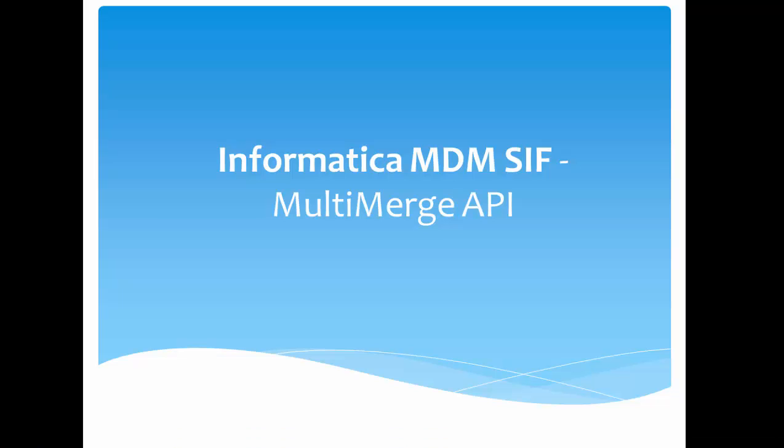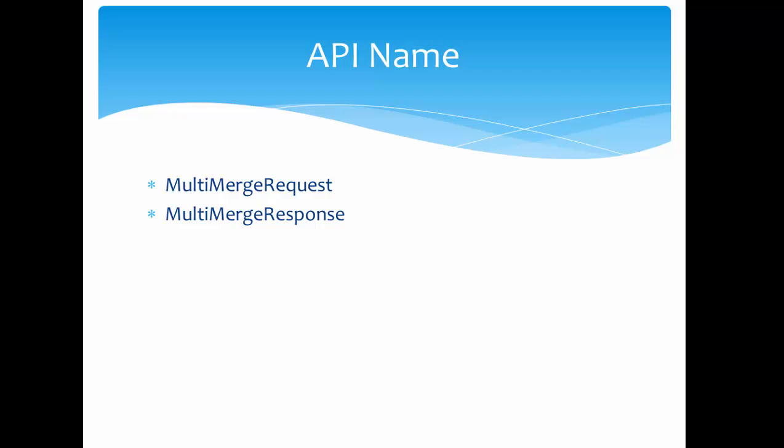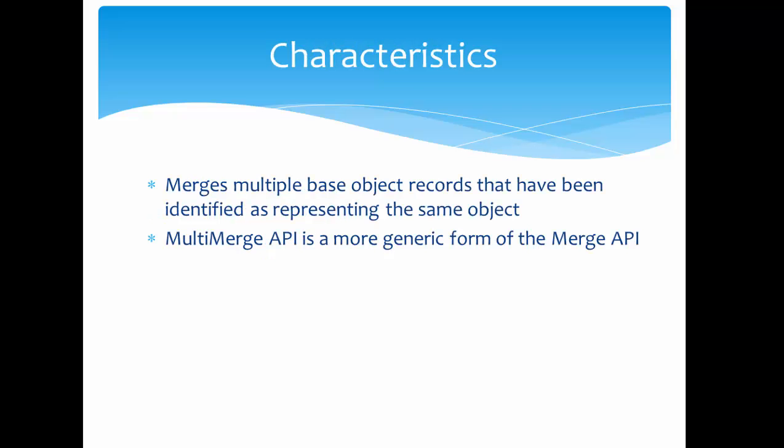Hello everyone, welcome back. In today's tutorial on Informatica MDM Services Integration Framework, we will see the Multi Merge API. In a recent tutorial we saw the Merge API, which is used to merge only one record. The Multi Merge API is used to merge more than one record in a single request. The classes available for the Multi Merge API are MultiMergeRequest and MultiMergeResponse.